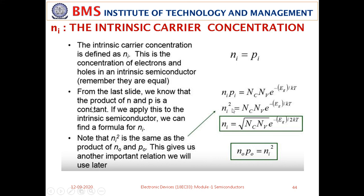n₀ × p₀ = NI² is the most important relation to remember for competitive examinations and GATE. From this, n₀ can be written as NI · e^((EF - EI)/kT), and EF - EI = kT · ln(n₀/NI). Similarly, p₀ = NI · e^((EI - EF)/kT), and EI - EF = kT · ln(p₀/NI). These are the formulas used in problems asked in examinations.